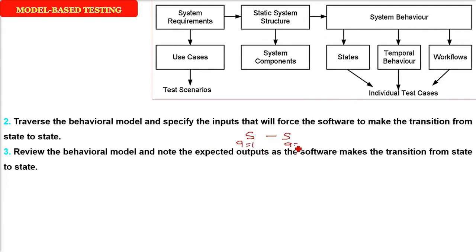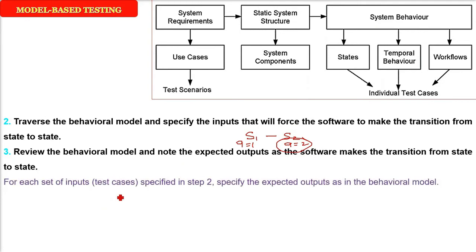For example, the state is changing, A is 1, A becomes 2. So we have to note the expected outputs. For each set of inputs, that is the test cases which are specified in step 2, we have to specify the expected outputs as in the behavioral model.